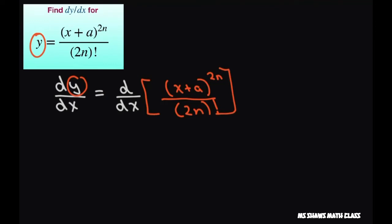Alright, so let's differentiate that. And we're going to get for x, this is going to equal 2n times x plus a. And then you have to subtract 1. So this is going to be 2n minus 1. And then we keep the denominator the same, 2n factorial.